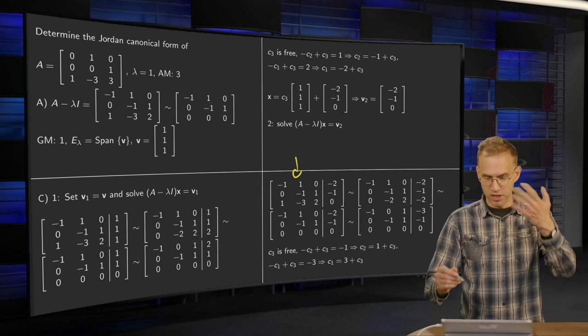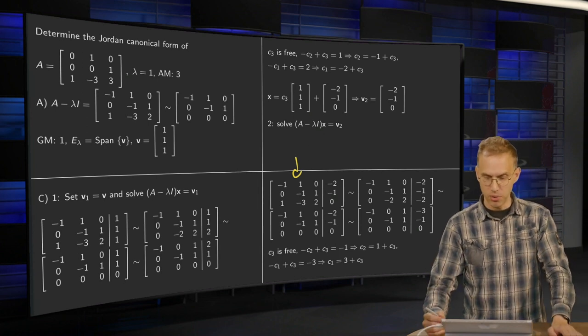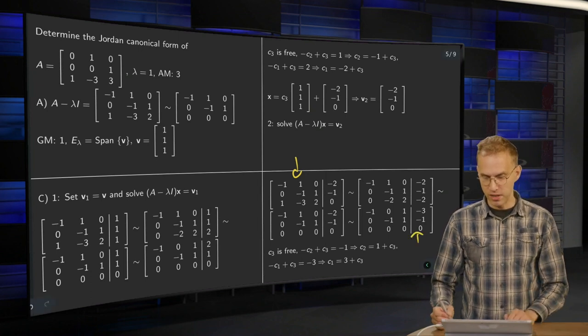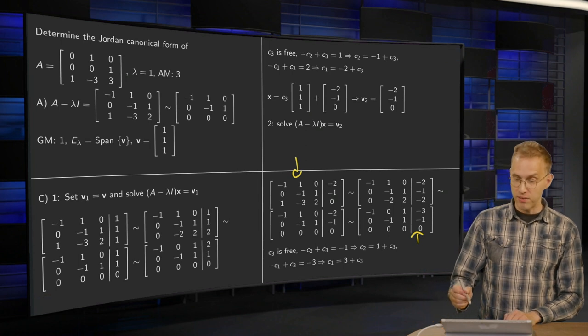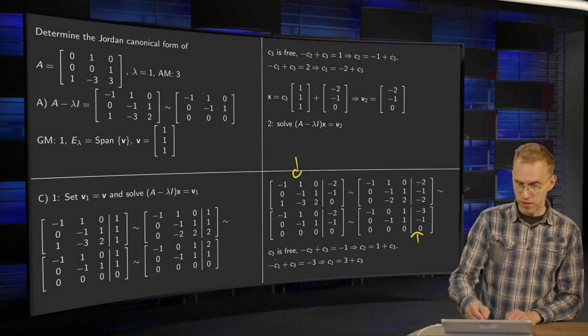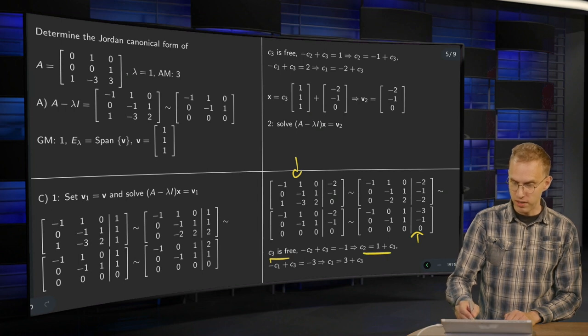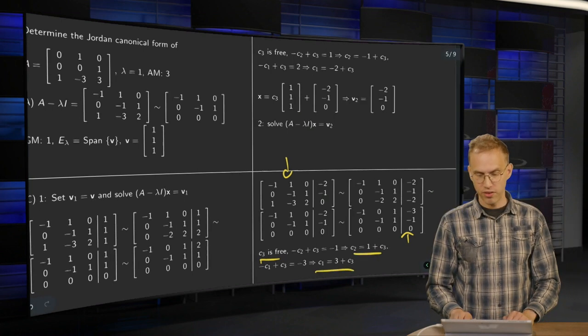Let's skip to the results straight away because it's a standard row reduction. So instead of this 2, 1, 0, you get here a minus 3, minus 1, 0. And then we can solve. C2 equals now 1 plus C3 and C1 equals 3 plus C3.